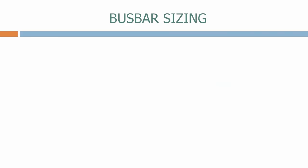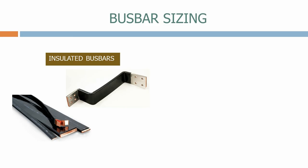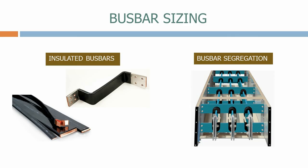We obviously want to minimise the chance of a fault occurring, and switchgear manufacturers use many methods to achieve this. These include using insulated busbars, where we coat a copper or aluminium conductor in a plastic coating, which minimises the chance of the busbar arcing across to the grounded housing. The other technique is busbar segregation, where the red, yellow and blue busbars are all housed in separate grounded channels, minimising the chance of a phase-to-phase fault occurring.